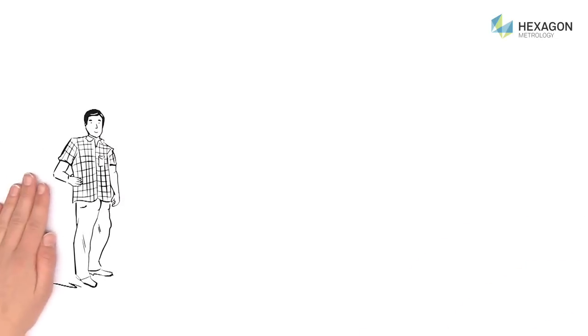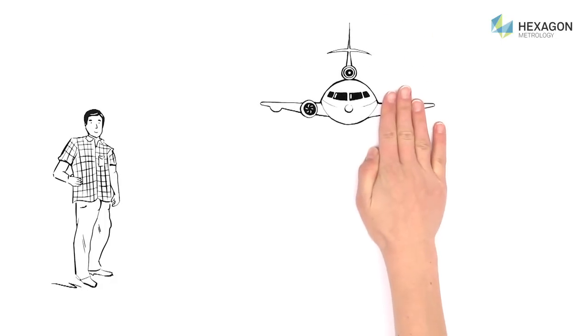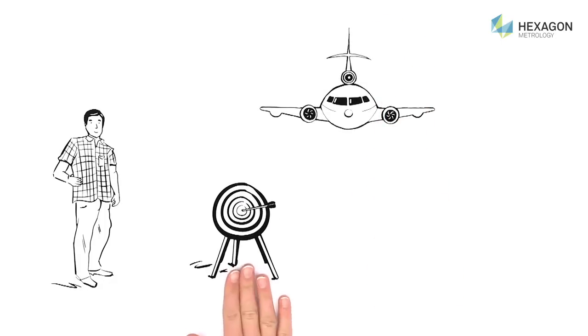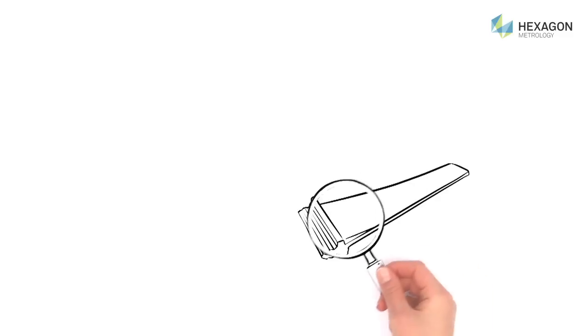Peter is a technician at a medium-sized company. Peter's company manufactures turbine blades for aircraft. Accuracy and high quality are of course the top priority. One of Peter's responsibilities is to check the manufactured components.